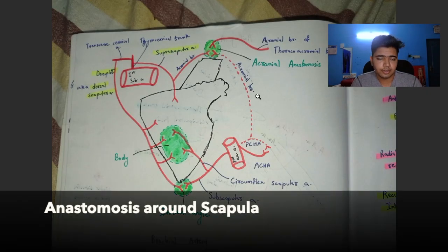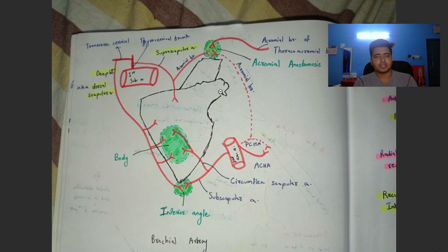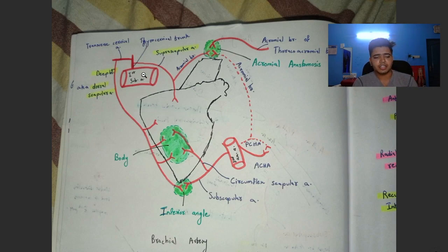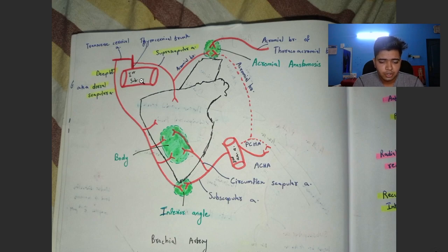Now let's look into the anastomosis around the scapula. The anastomosis around the scapula ensures that blood is continuously supplied to the upper limb when there is compromise of blood supply in the second part of the axillary artery. The anastomosis mainly connects the first part of the subclavian artery to the third part of the axillary artery.